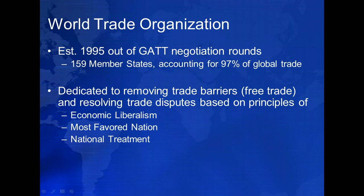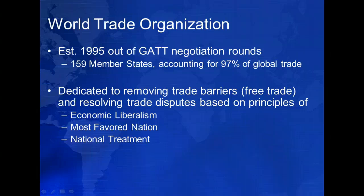The principle of national treatment prohibits member states from treating foreign producers differently than it treats its own citizens. Imported and locally produced goods must be treated equally, at least after the foreign goods have entered the market. This prevents governments from requiring the purchase of domestically produced goods. Collectively, MFN and national treatment are the carrot that compels so many countries to seek WTO membership.